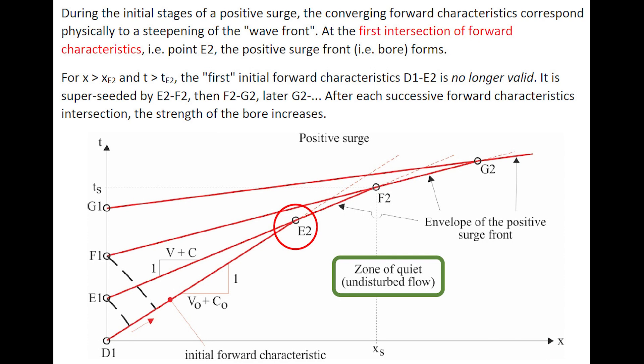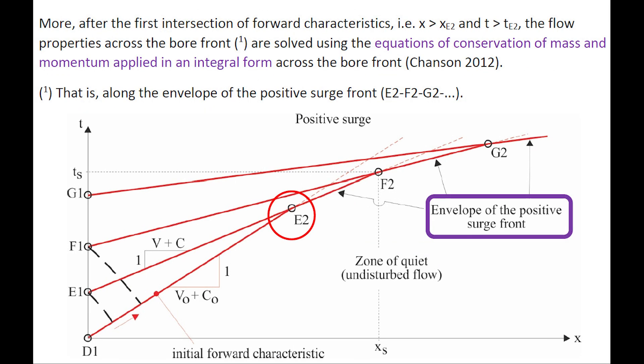At the first intersection of forward characteristics, that is the point e2, the positive surge front, or the bore, forms. By time t greater than the time of e2, the first initial forward characteristic d1–e2 is no longer valid. It becomes superseded by the line e2–f2, then f2–g2, and then g2 onward. After each successive forward characteristic intersection, the strength of the bore increases. Moreover, after the first intersection of forward characteristics, the flow properties across the bore front are solved using the equations of conservation of mass and momentum applied in integral form across the bore front.